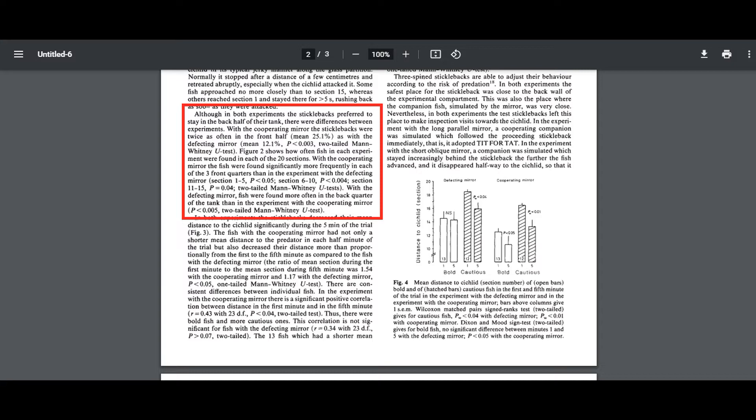The results were quite intriguing. According to the paper, quote, with the cooperating mirror, the sticklebacks were twice as often in the front half as with the defector mirror. With the cooperating mirror, the fish were found significantly more frequently in each of the three front quarters than in the experiment with the defecting mirror. With the defecting mirror, fish were found more often in the back quarter of the tank than in the experiment with the cooperating mirror, close quote. So, the sticklebacks not only got closer to the tilapia, but they spent more time closer to the tilapia when they thought they had a cooperator. This is fully in line with the reciprocal altruism thesis.